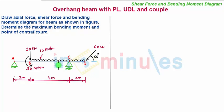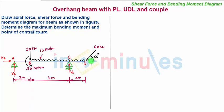Nothing changes — we solve this problem in a similar fashion. We first draw the support reactions at the two supports. At the roller support, there will be a vertical support reaction denoted as VC. At the hinged support at A, there will be a vertical support reaction VA and a horizontal support reaction HA. The horizontal component of the inclined force, 60 cos 60, acts towards the left and will be supported by HA.